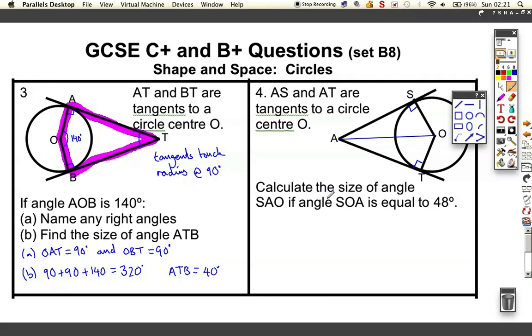It tells us to calculate the size of the angle SAO. So we want to find this angle, let's call it x. If SOA is 48 degrees, we have to use this tangent meeting at 90 degrees. We've got a triangle in this case. We know that 90 plus 48 is equal to 138 degrees. I need to do 180 minus 138, which comes up with 42 degrees. So angle SAO is 42 degrees.